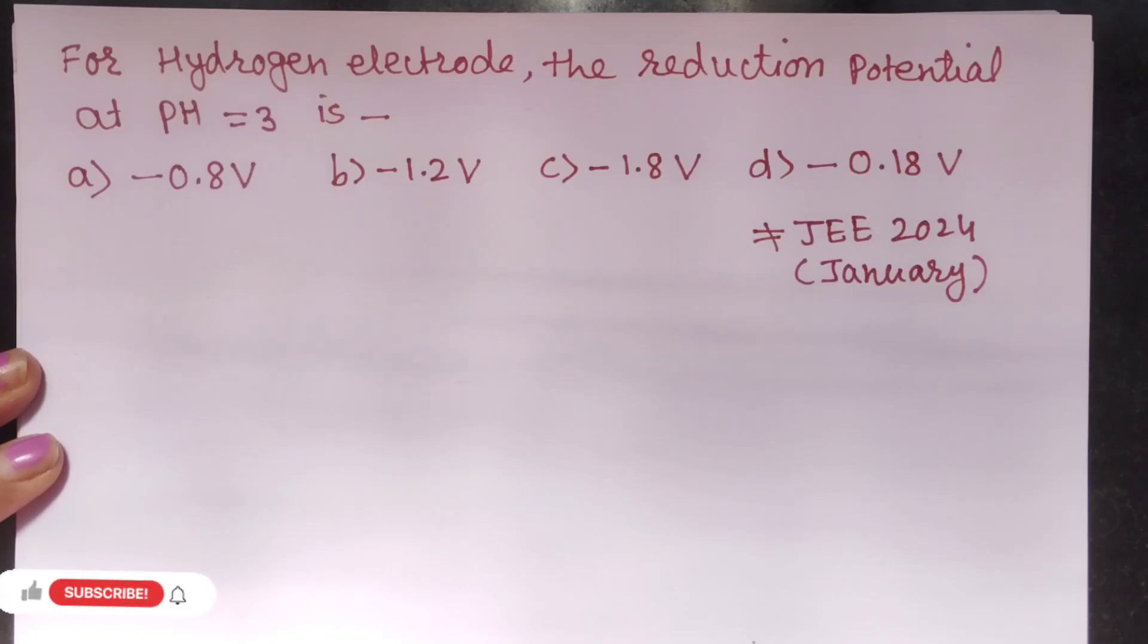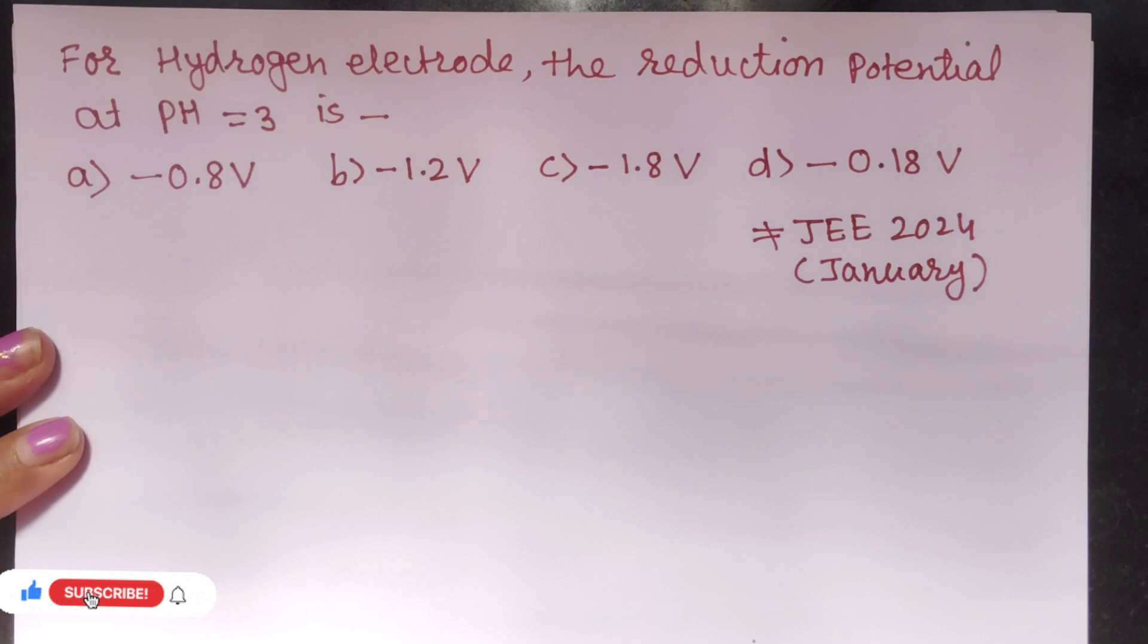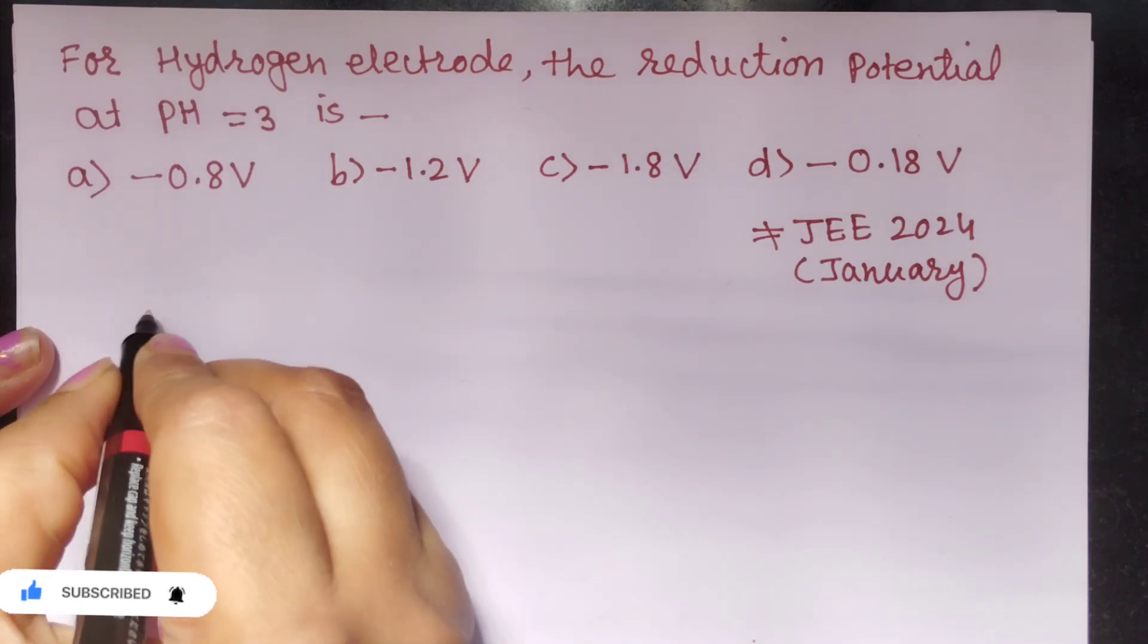In this question they are asking the reduction potential for hydrogen gas electrode when pH is equal to 3. Now here we will be using the Nernst equation. So what is Nernst equation?